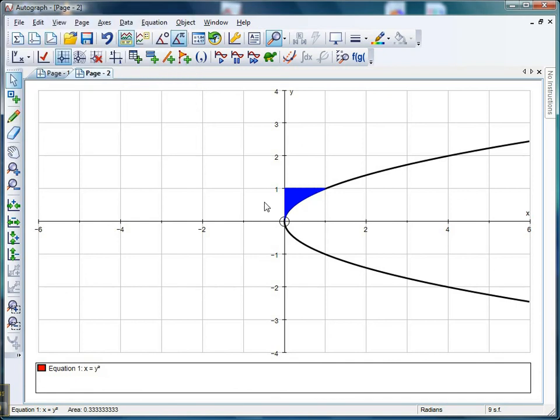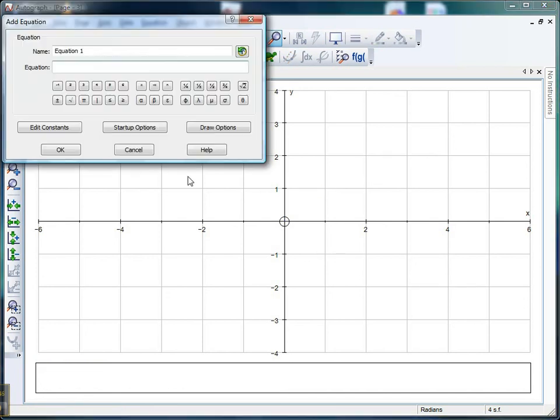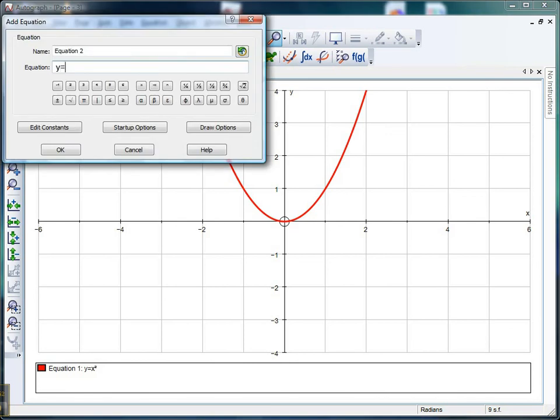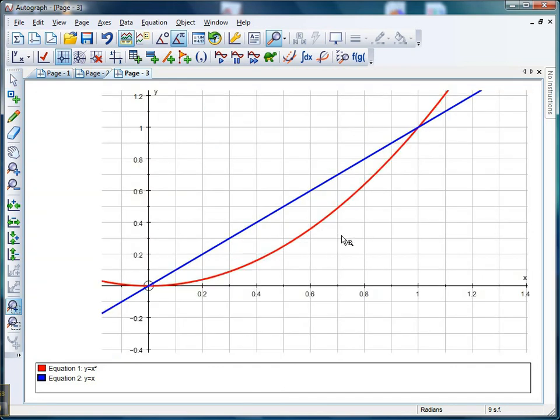The final thing you may wish to do with integration, and again I'll get myself a brand new 2D graph page, is the area between a curve and a line. Let's have y = x² and the classic y = x. There's our little area that we'd love to find out there. I can't really see that, so I'm going to zoom in using my marquee zoom.